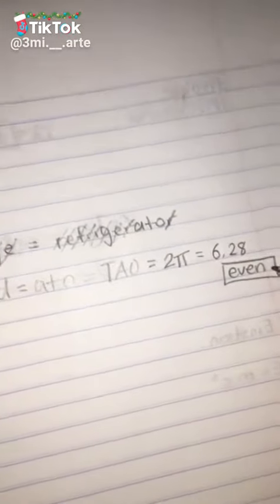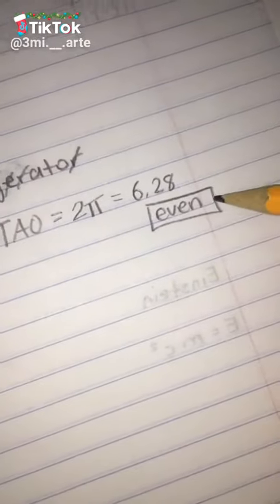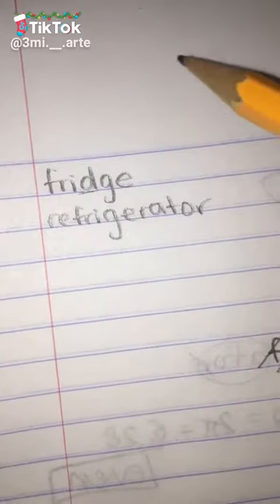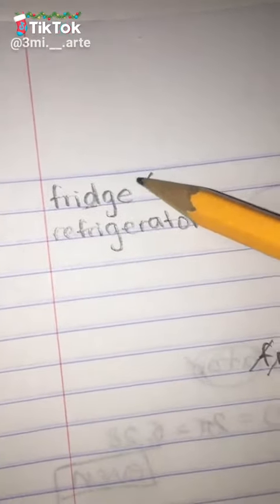Now, you may be asking, why am I pointing out that this is an even number? Well, let's just look back here. Fridge, it has six letters in it, and six is an even number.